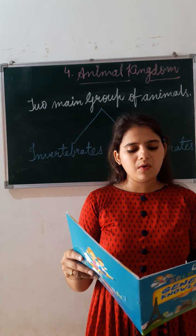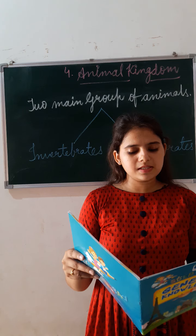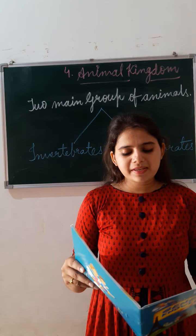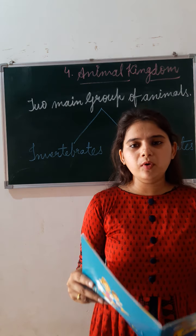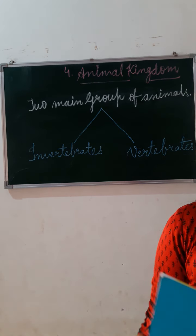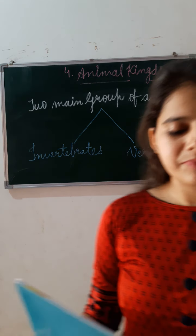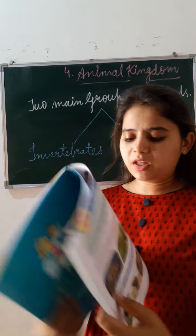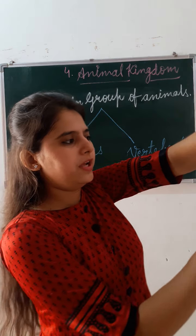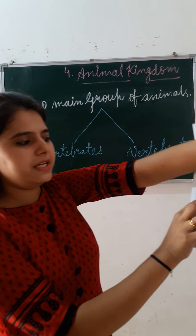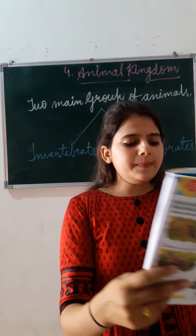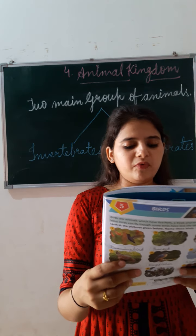For examples of invertebrates, I have to see in the book — sponges, insects, worms, and extra pictures come in books. You can see them from the book and you can see them from the internet. The pictures you are seeing here show sponges, insects, and worms.